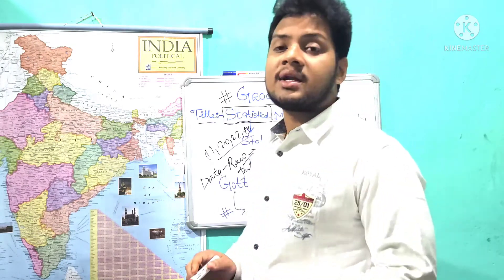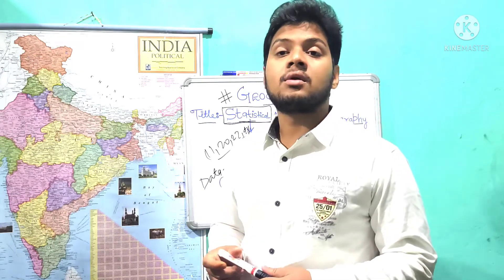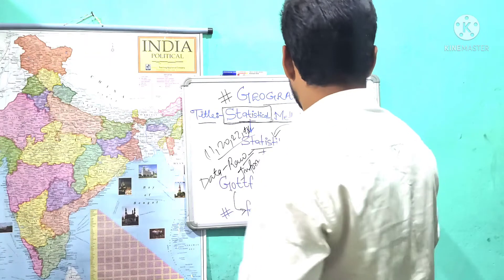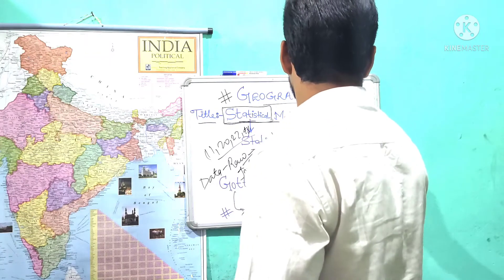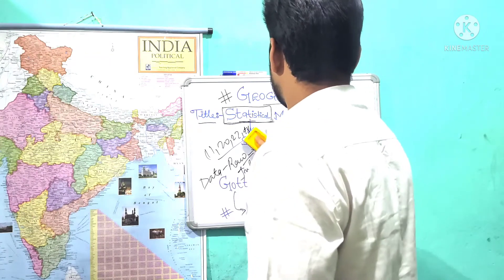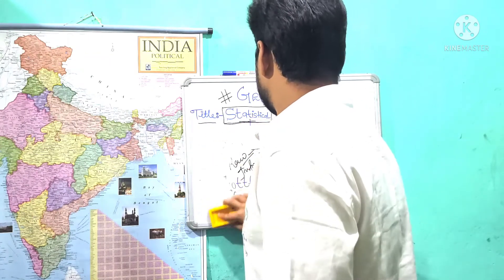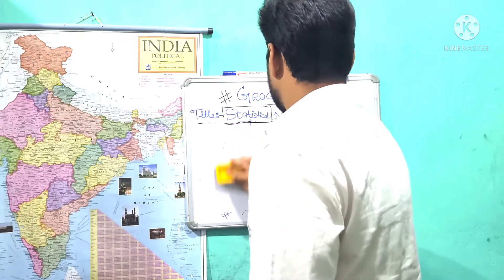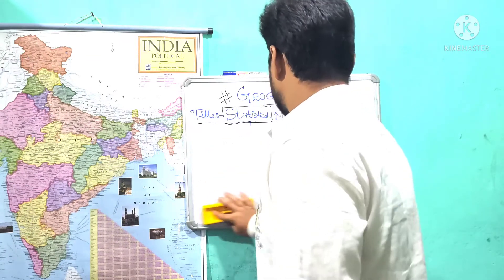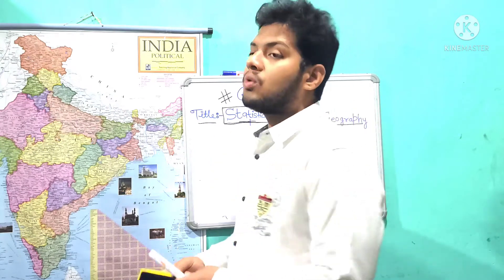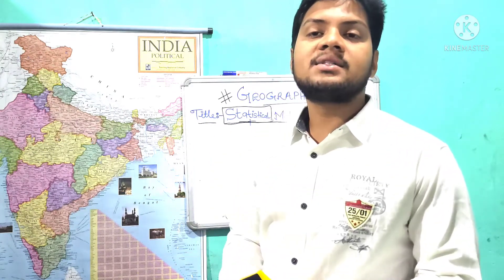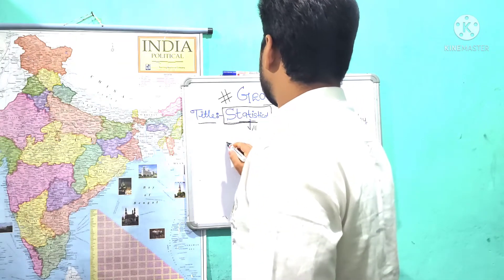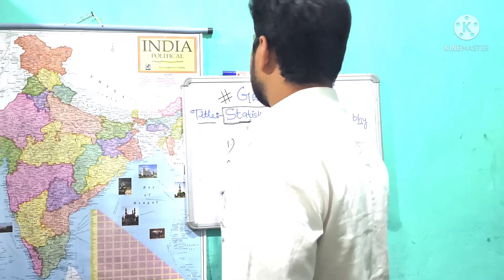Data is basically raw information. Statistics consists of two branches. One is called descriptive statistics and the second is called inferential statistics.